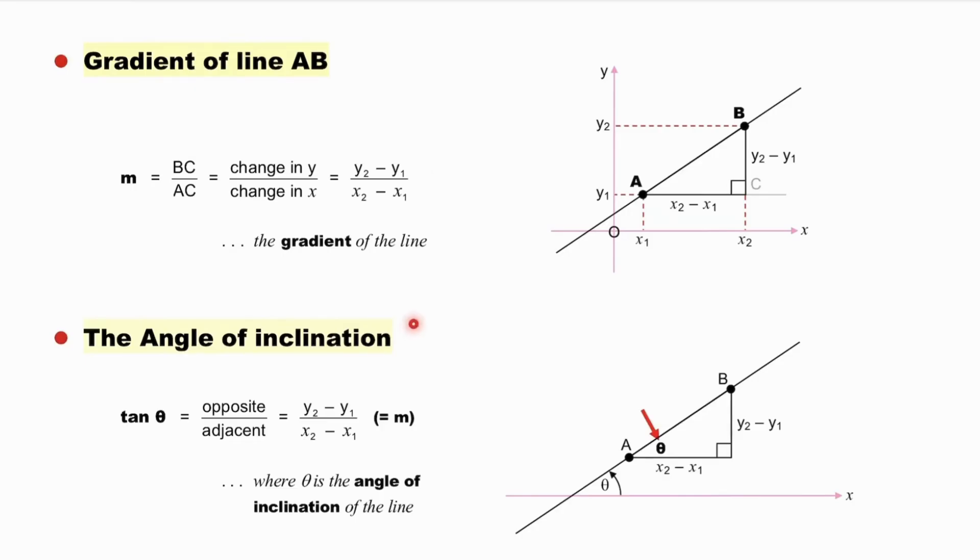And the angle of inclination? See the angle theta on the figure below. The tan of theta is (y2 minus y1) over (x2 minus x1). The very same formula that we got for the gradient of the line above, where theta is the angle of inclination of the line. Observe the corresponding angles of theta, one in the triangle and the one on the x-axis. These are corresponding angles, which are equal because of the parallel lines.